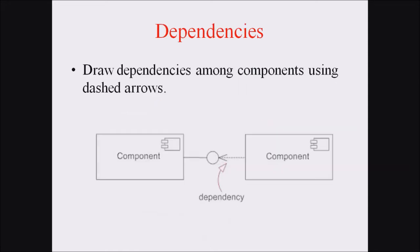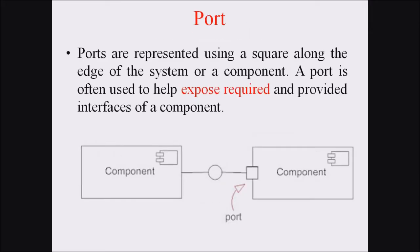Next, we are representing dependencies. Dependencies are represented with dashed or dotted arrows. This means a component is depending upon another component, or one term is depending upon another term. These dependencies are represented by dotted arrows.